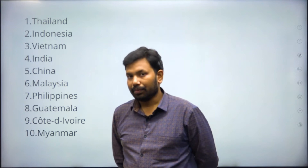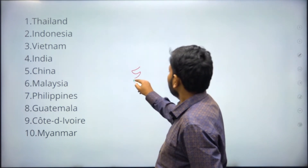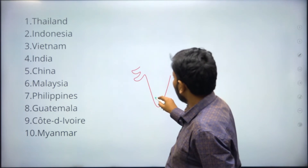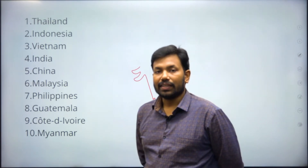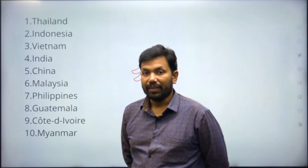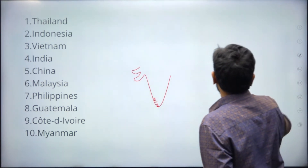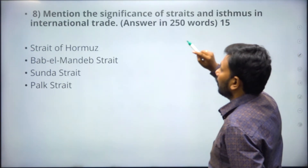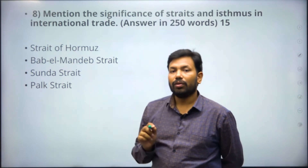The question does not specifically ask about India's distribution, but since we are Indians, you can mention that in the Western Ghats, existing forests have been cut down and rubber cultivation has been increased. You can write about this as India-specific context.